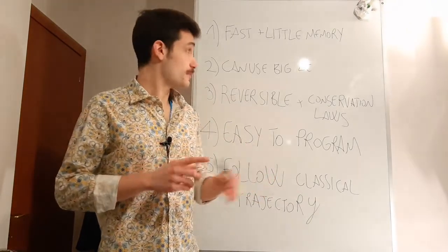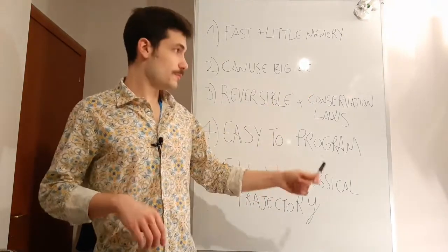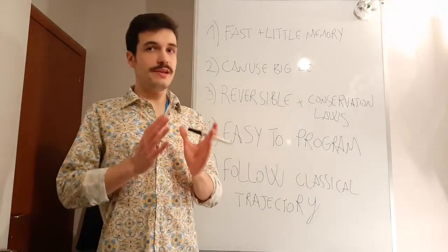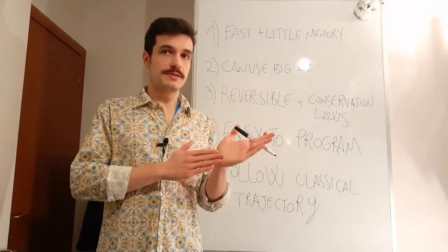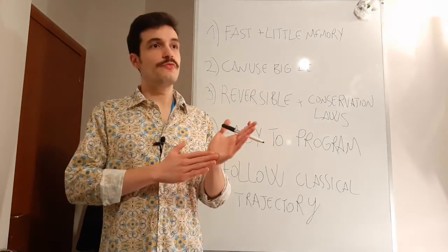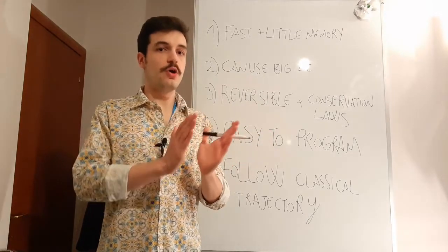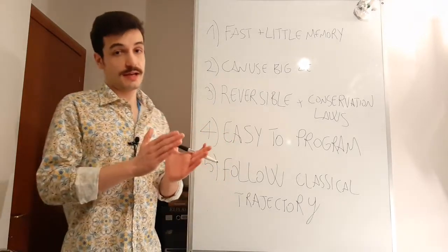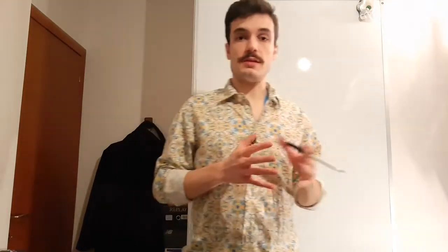And maybe the most important thing is that it must follow as nearly as possible and for as long as possible the classical trajectory. Because, as we are using discrete time steps, and we also have floating point errors, we will never exactly follow the classical trajectory — we will follow another trajectory, but we hope that it will be as near as possible to the classical one.